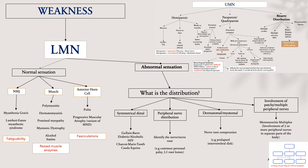In lower motor neuron weakness with affected sensation, it is most likely a nerve root or peripheral nerve involvement. Ask yourself about the distribution. A symmetrical distal distribution should raise your suspicion of Guillain-Barré syndrome, which can be caused by a bout of infectious diarrhoea or can just come on its own. You can also find symmetrical distal distribution of weakness and sensation loss in diabetic or alcoholic neuropathy, HIV, or Charcot-Marie-Tooth.